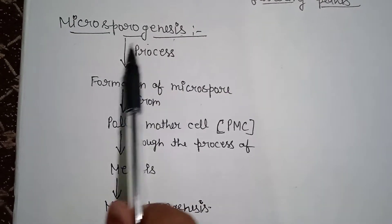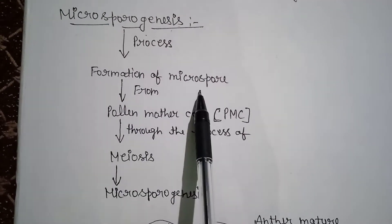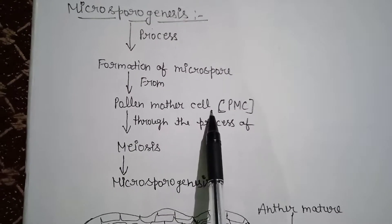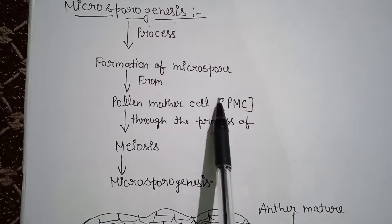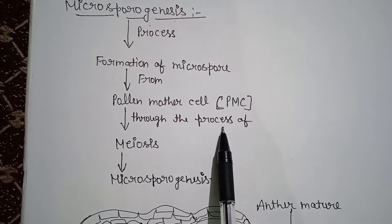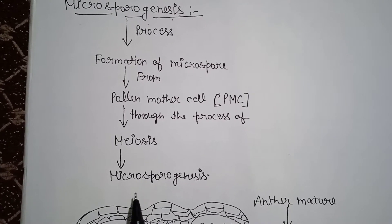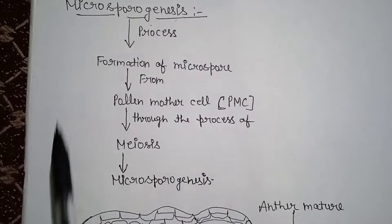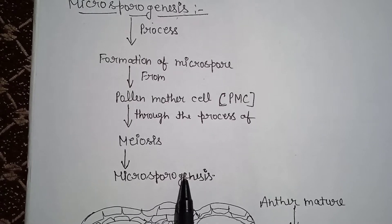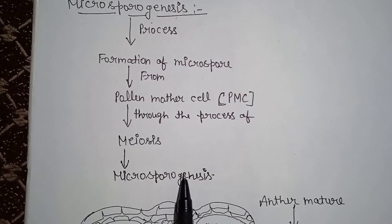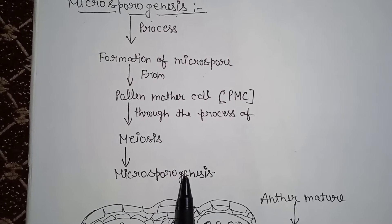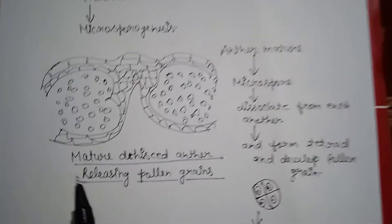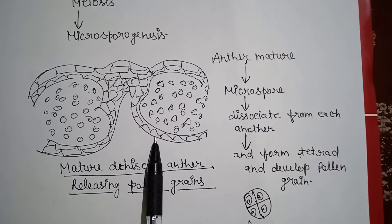Microsporogenesis is a process of formation of microspore from the pollen mother cell. The pollen mother cell undergoes meiosis, and this process of formation of microspore from pollen mother cell or PMC through the process of meiosis is known as microsporogenesis. Now let's talk about this diagram.